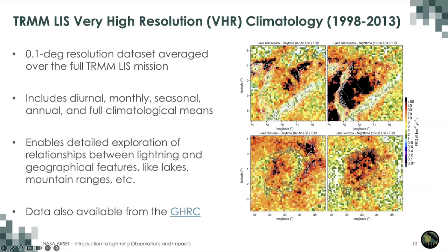A standalone TRMM-LIS climatology covering 1998–2013 was also produced at 0.1-degree (about 10 km) resolution, covering diurnal, monthly, seasonal, and annual means. This allows exploration of relationships between lightning and geographic features like lakes or mountain ranges. For example, Lake Maracaibo in northern Venezuela and Lake Victoria in eastern Africa are well known for significant nighttime thunderstorm activity, and the high-resolution TRMM data captures how lightning clusters around these lakes and nearby mountain ranges.